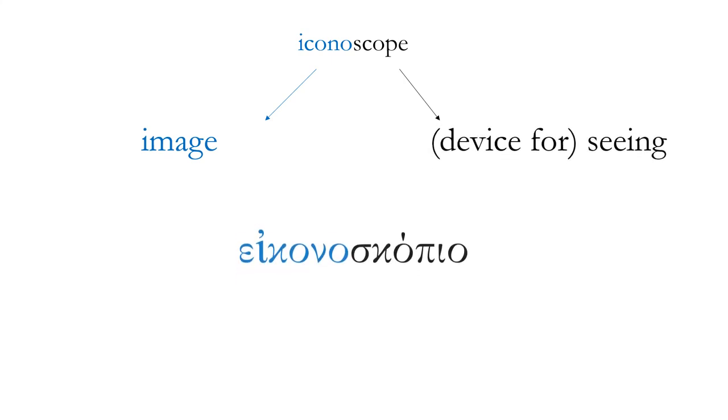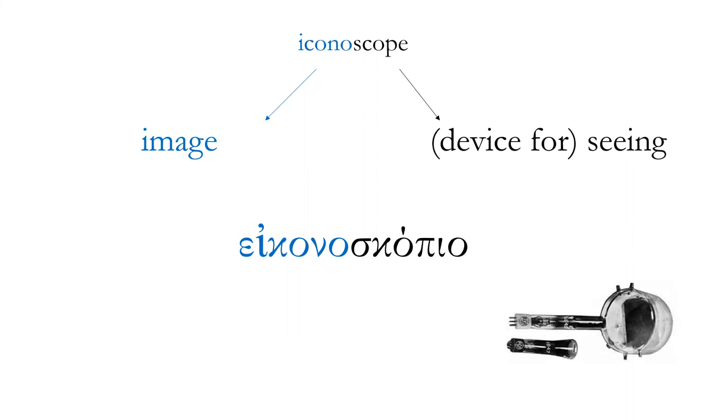An iconoscope is something you probably haven't seen before. An icon is an image. Iconoscopio is our word. And this was an old tube that was used in cameras a long time ago. What do cameras do? They capture images.